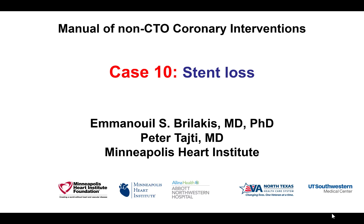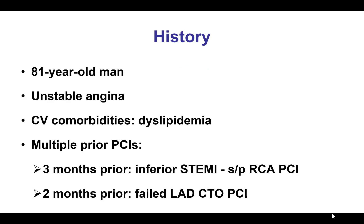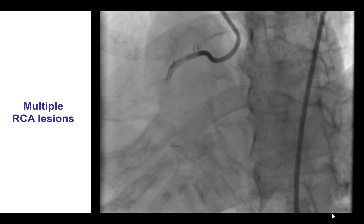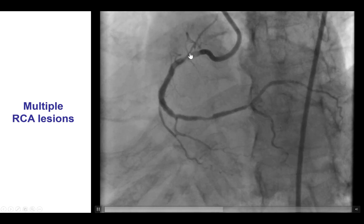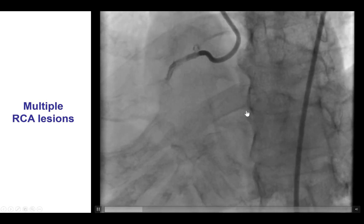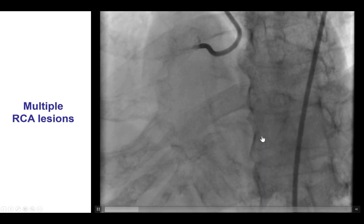This is a case illustrating how to approach stent loss. The patient was an elderly man who presented with unstable angina. Three months prior, he had presented with inferior ST-segment elevation myocardial infarction and was treated with PCI of the right coronary artery, whereas later he had an unsuccessful attempt for PCI of an LAD CTO. Upon presentation, the patient was found to have in-stent restenosis within the previously placed proximal right coronary stents, but also disease in the distal right coronary artery, immediately proximal to the PDA and PLV bifurcation.